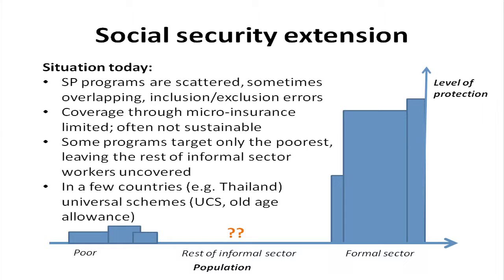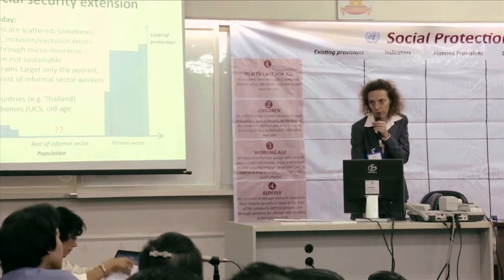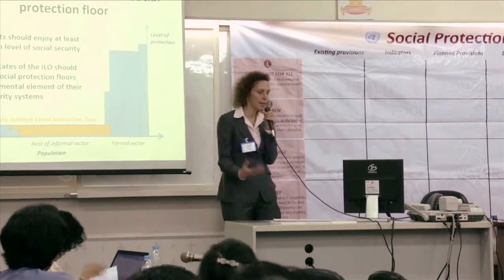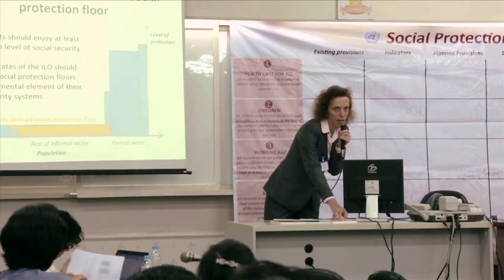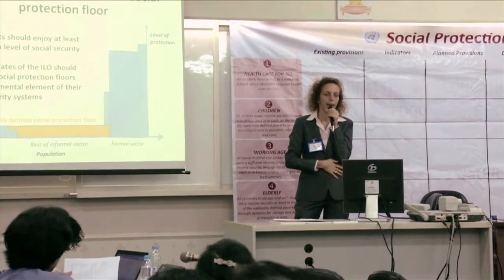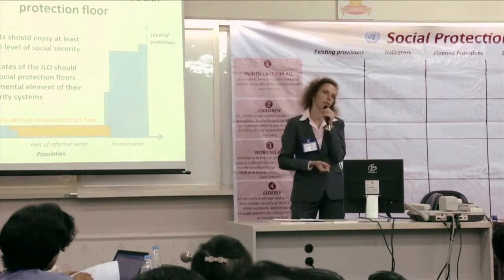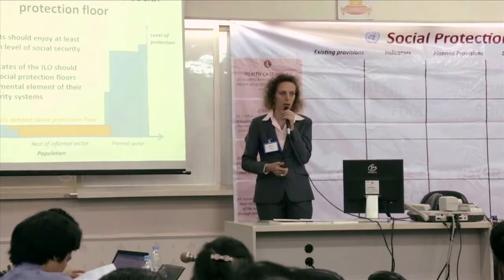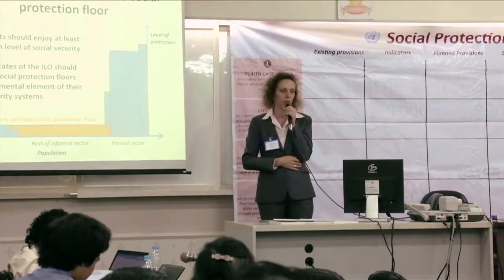Only a few countries, like Thailand, already have universal schemes that provide social protection to the whole uncovered population — such as the universal healthcare scheme and the old age allowance. The social protection floor idea developed gradually over recent years and was reinforced after the global financial crisis, when the UN pushed for initiatives to face the crisis and accelerate recovery. The Social Protection Floor Initiative was launched in April 2009.